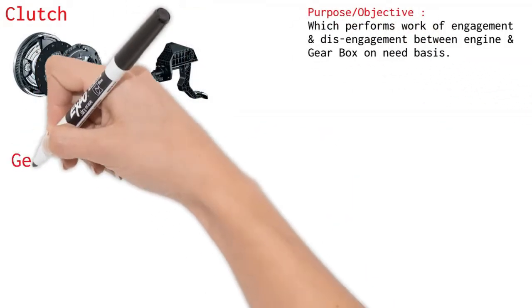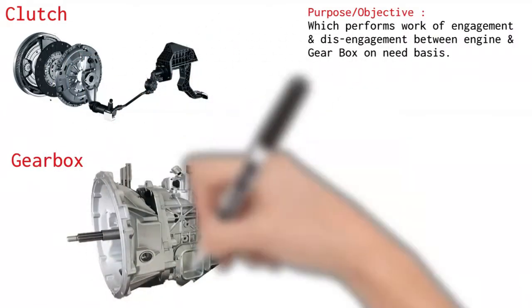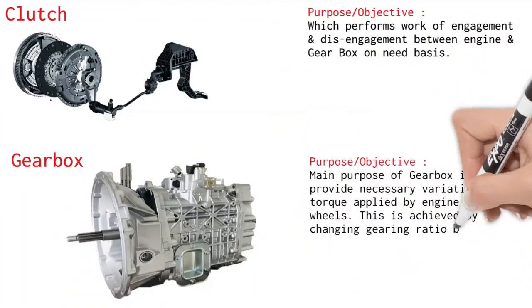The gearbox. Main purpose of gearbox is to provide necessary variation to torque applied by the engine to wheels. This is achieved by changing gearing ratio between engine output shaft and drive shaft.